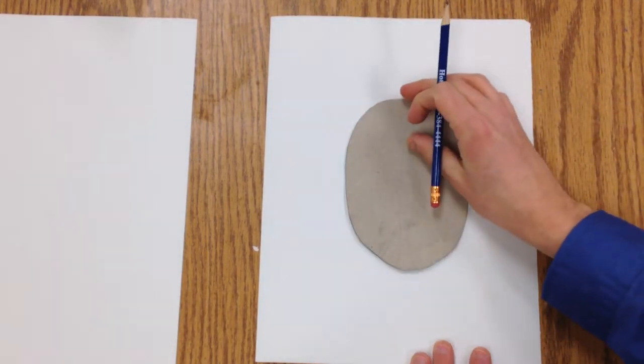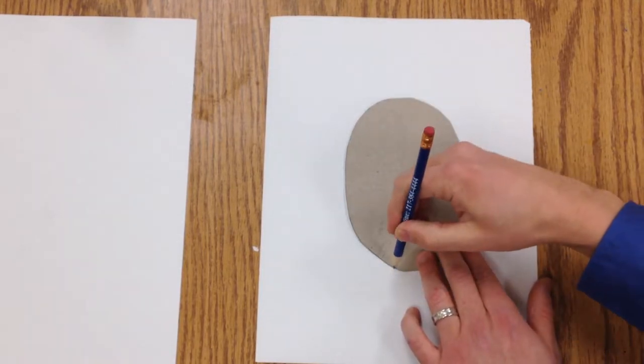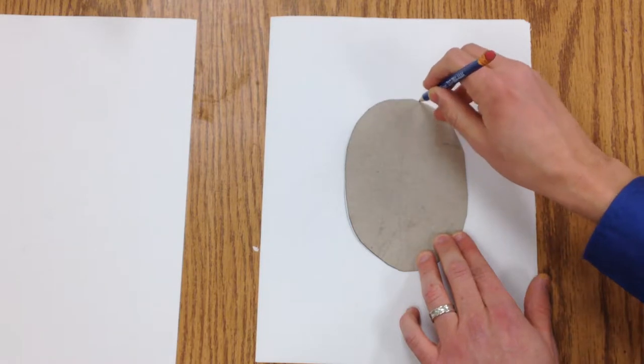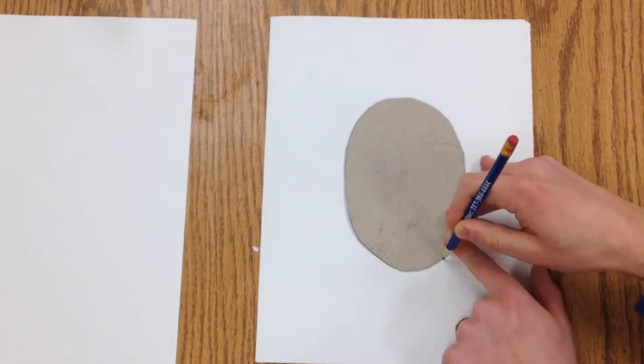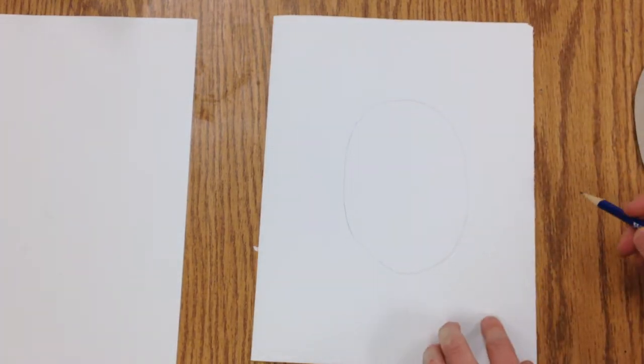The first thing we're going to do is put this template in the middle of our paper. It's an oval, and I'm going to trace very lightly around it. I call this a whisper line because it's going to be a guideline that I might erase parts of later.